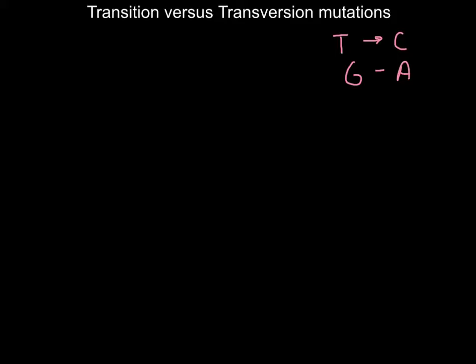I hope everyone knows that A pairs with T and C pairs with G. I want to build a square, and a square has four corners. For the top left corner I would use A — easy to remember because it's the first letter of the alphabet. A pairs with T, so I put T in the lower right corner, and C pairs with G, so I put them on the opposite sides.